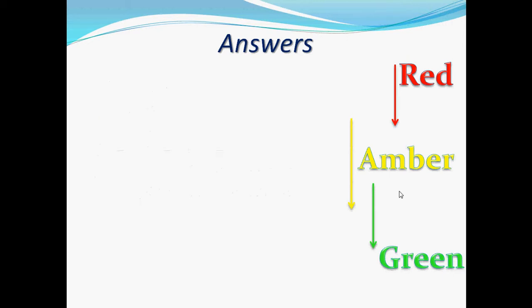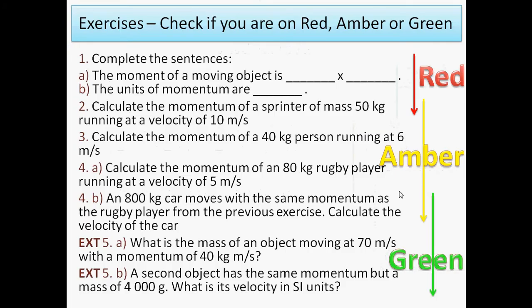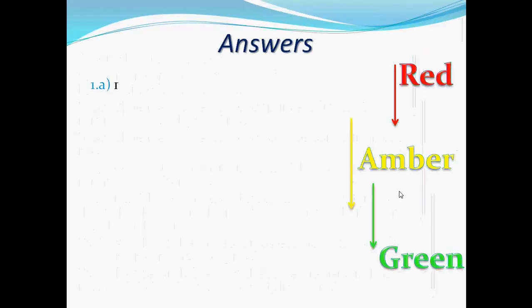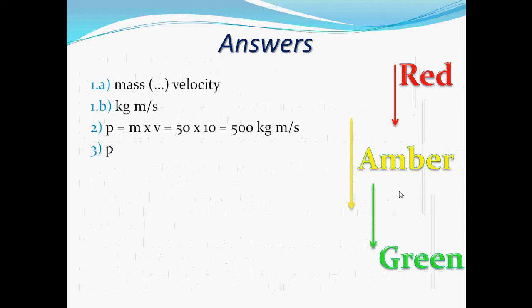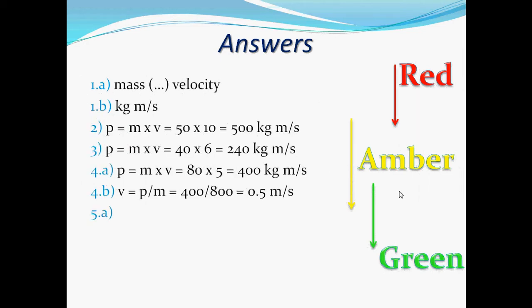What is the mass of an object moving at 70 meters per second with a momentum of 40 kilograms meters per second? So momentum equals mass times velocity, so mass is going to be momentum divided by velocity, so that's going to be 40 divided by 70, that gives me 0.57 meters per second.